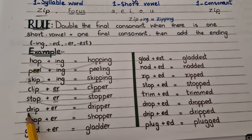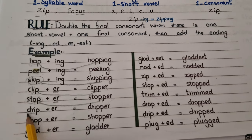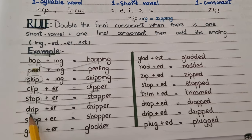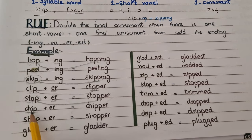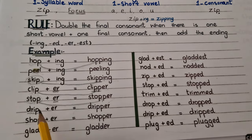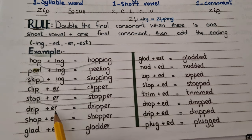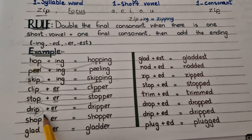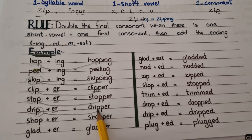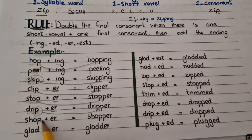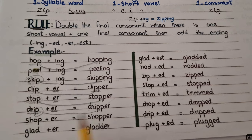'Drip'. This is a one-syllable word, and it also has one short vowel sound and a final consonant. So when we add a suffix at the end of the word, we will double the final consonant. 'Drip' becomes 'dripped'.